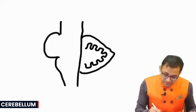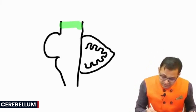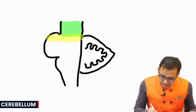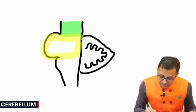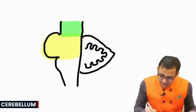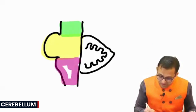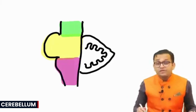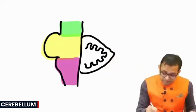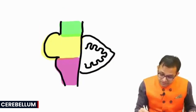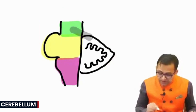This is our midbrain. Here is the pons, and this is the medulla oblongata. The cerebellum is attached with the brainstem with the help of three peduncles.